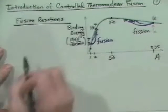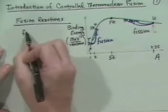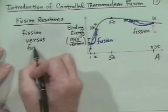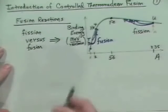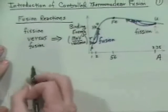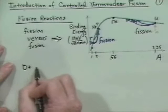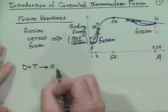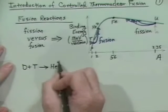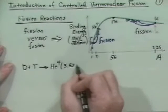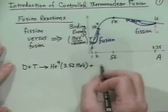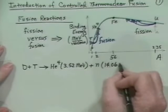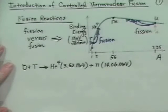Now the particular reactions that we're interested in are a number. The most prominent one in the fusion business is D plus T, which goes to an alpha particle with 3.52 MeV plus a neutron with 14.06 MeV. That's a pretty energetic neutron.